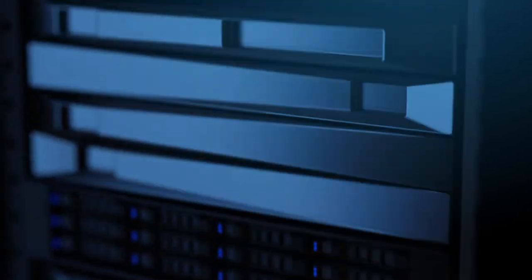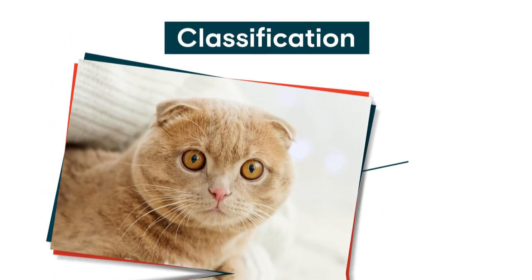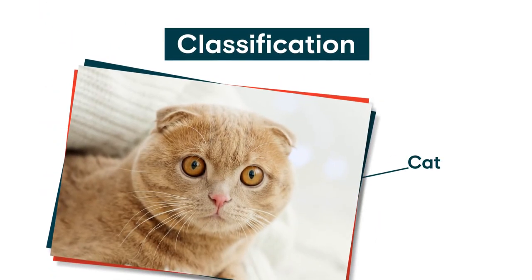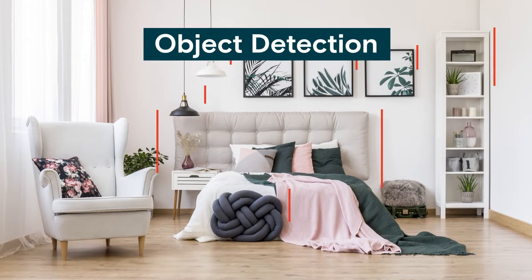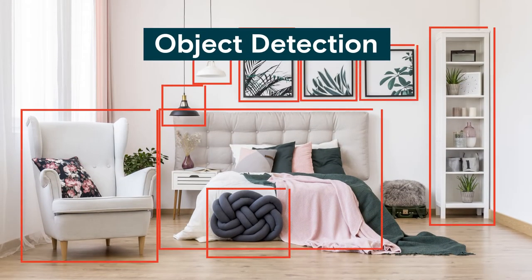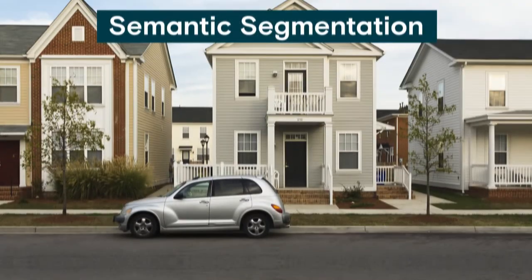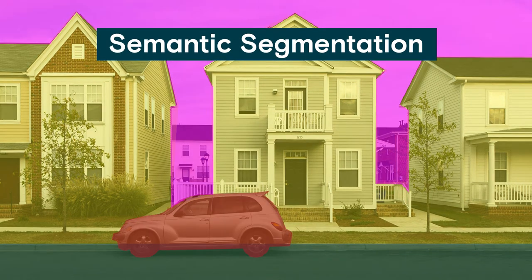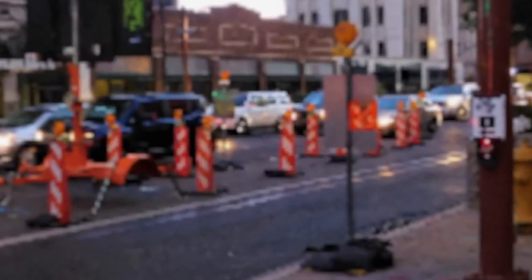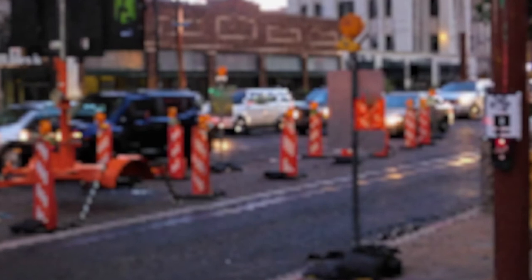There are three main methods for effective image annotation. Classification, which applies one label per image. Object detection, which identifies target objects. And semantic segmentation, which assigns every pixel to a class.